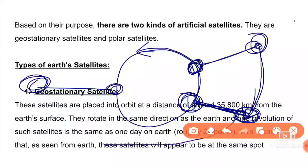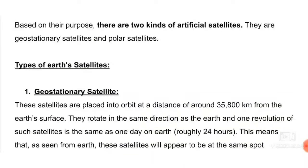Because it continues to revolve and the Earth completes one rotation in 24 hours, the satellite also completes one circle in the same time.